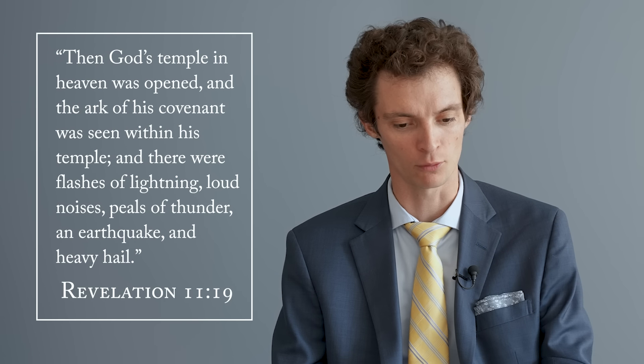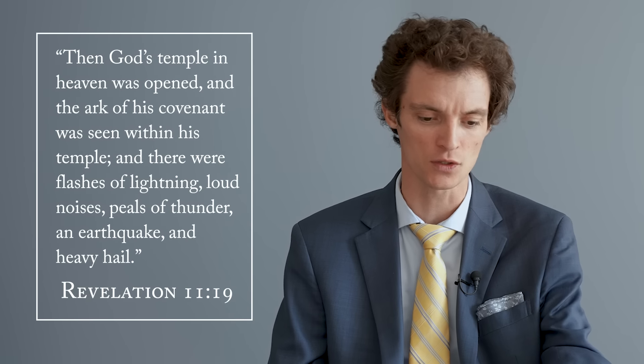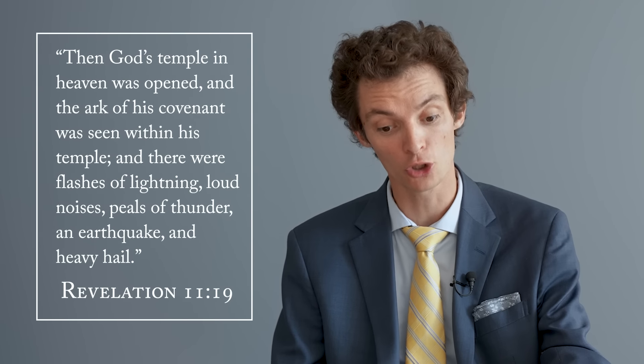The most important text is to take that image of the new ark that we've already established from Luke 1, and we need to place that new ark in heaven. And we see that in the book of Revelation, the Apocalypse of John. If we look at the closing verses of Revelation 11 and the opening verses of Revelation 12, then God's temple in heaven was opened, and the ark of his covenant was seen within his temple. And there were flashes of lightning, loud noises, peals of thunder, an earthquake and heavy hail.